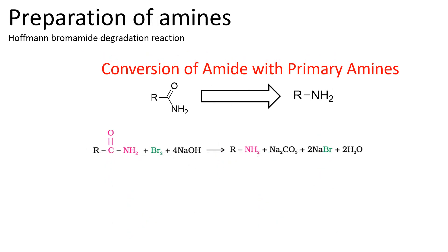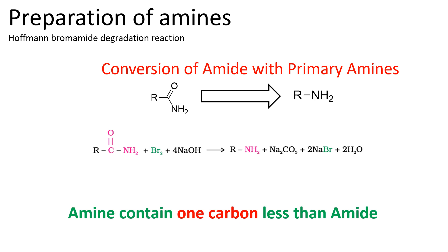The next reaction is the Hoffmann bromamide degradation reaction. Here, amides are converted to amines. This is called a degradation reaction because the final amine product has one carbon less than that of the amide — that is, the carbonyl carbon is missing.